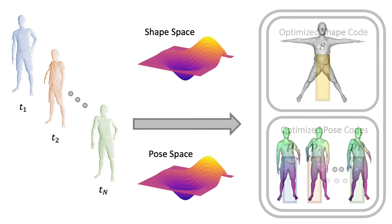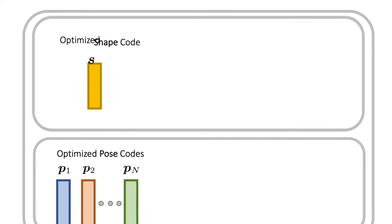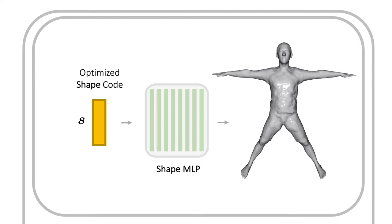After jointly optimizing for the shape and pose codes, to reconstruct the input sequence, our approach only requires extracting the canonically posed shape once. We decode the optimized shape code S for every query point X in a 3D grid, and then run marching cubes to extract the surface.